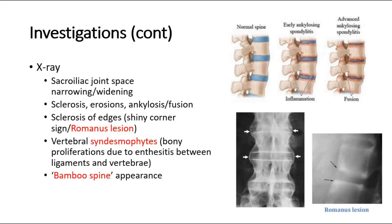On X-ray, it can show sacroiliac joint space narrowing or even widening. Sclerosis, erosions, and ankylosis may be seen as well. Sclerosis of the edges, also called the Romanus lesion, can be seen in the lower right picture, showing shiny corners of the vertebrae. Other X-ray signs include vertebral syndesmophytes, where there are bony proliferations between the ligaments and vertebrae. The bamboo spine appearance is seen in later stages, where calcification of the ligaments with ankylosis causes the bamboo spine appearance, as shown in the lower left picture.